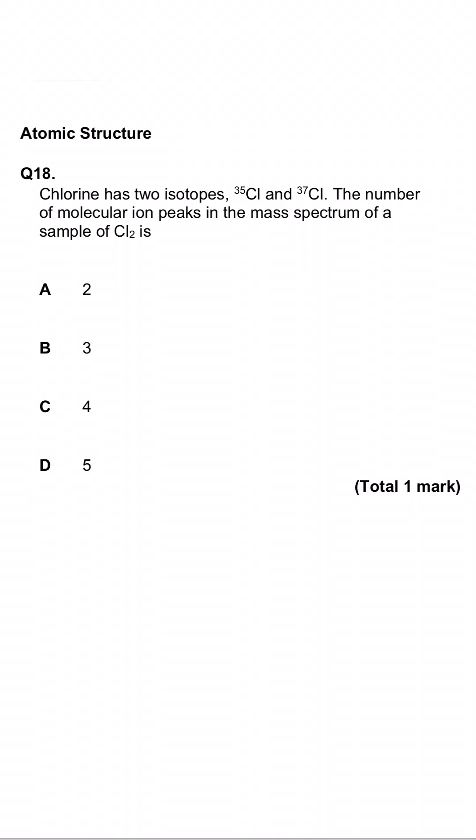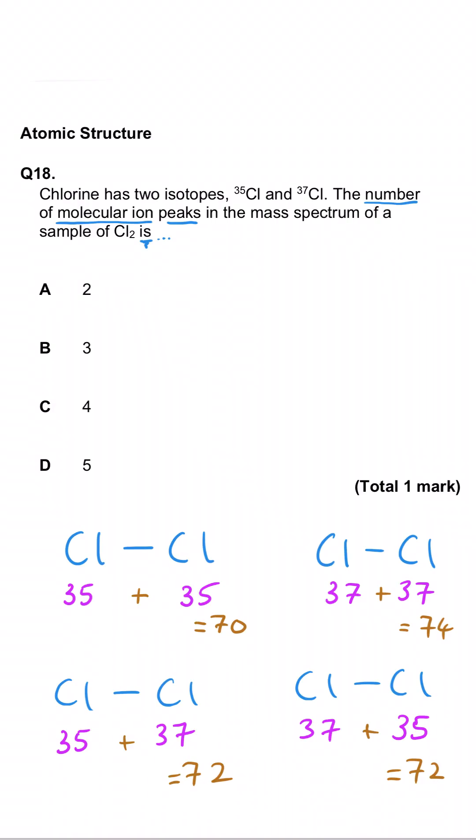This question is about isotopes, chlorine-35 and 37, and it's about the molecular ion peaks for Cl2. We're simply asked, what is the number of molecular ion peaks that Cl2 will have? We're looking at the different combinations from these two isotopes. Our two chlorine atoms could both be 35, or both 37, or a 35 and a 37, and a 37 and a 35. If we look at what the totals are for the masses, we've got 70, 74, and the bottom two are both 72. So there will be three different peaks, which means that B is the correct answer.